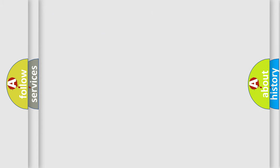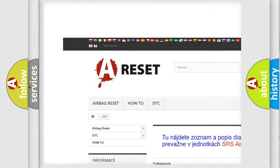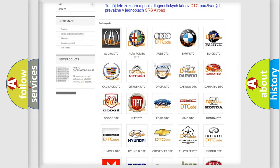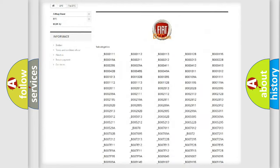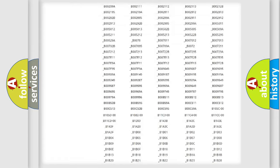Our website airbagreset.sk produces useful videos for you. You do not have to go through the OBD2 protocol anymore to know how to troubleshoot any car breakdown. You will find all the diagnostic codes that can be diagnosed in Fiat vehicles.